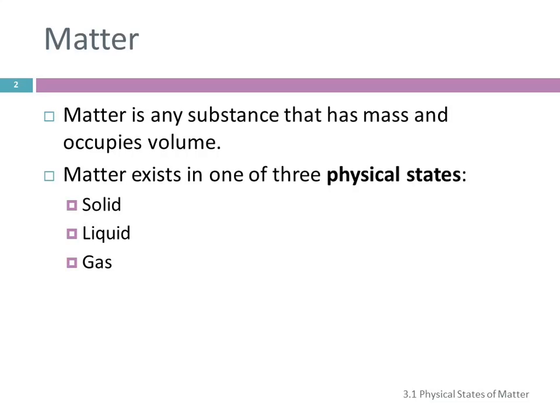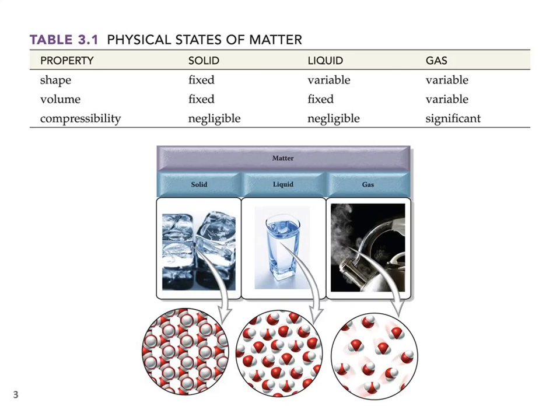So matter can exist in one of three physical states, solid, liquid, and gas. And then there's usually somebody that says, yes, but what about plasmas? Well, there is a fourth one, but we don't talk about it in general chemistry, so we're not going to talk about it.